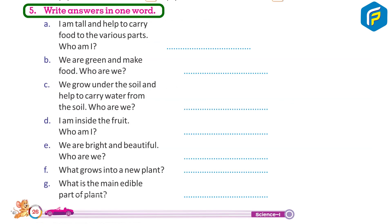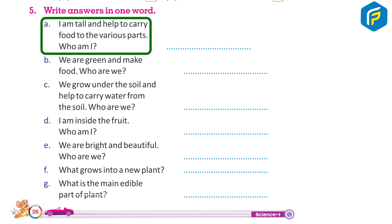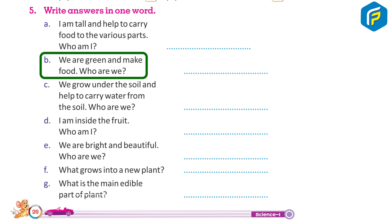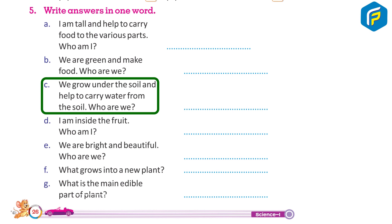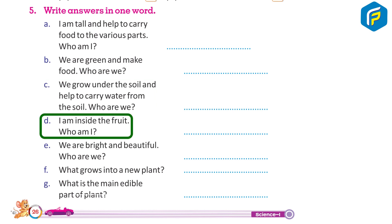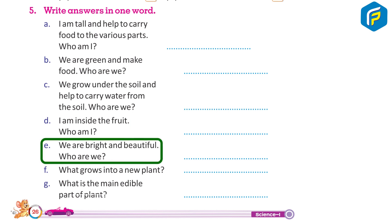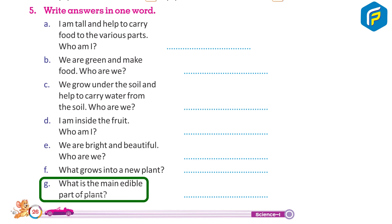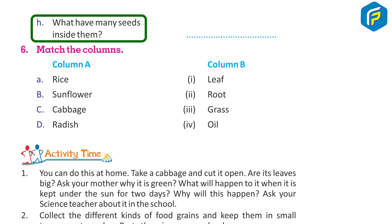Write answers in one word. A. I am tall and help to carry food to the various parts. Who am I? B. We are green and make food. Who are we? C. We grow under the soil and help to carry water from the soil. Who are we? D. I am inside the fruit. Who am I? E. We are bright and beautiful. Who are we? F. What grows into a new plant? G. What is the main edible part of plant? H. What have many seeds inside them?